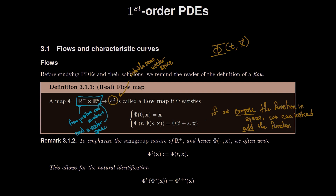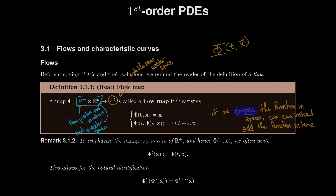Flows and flow maps are the same thing. These are functions from the positive real numbers and a vector space — think R^d — into the same vector space. It's very important that this has to be the same vector space. Our function, capital phi, has a time parameter and a vector space parameter. It satisfies a very particular property: composing the function in space is equivalent to adding in time.